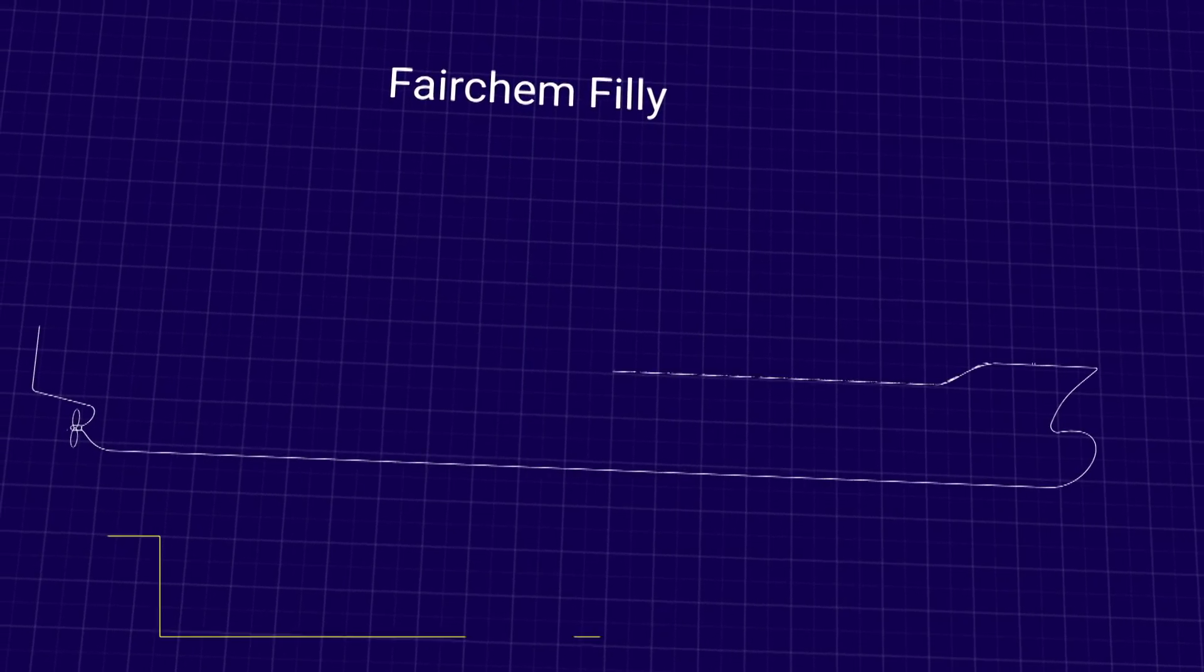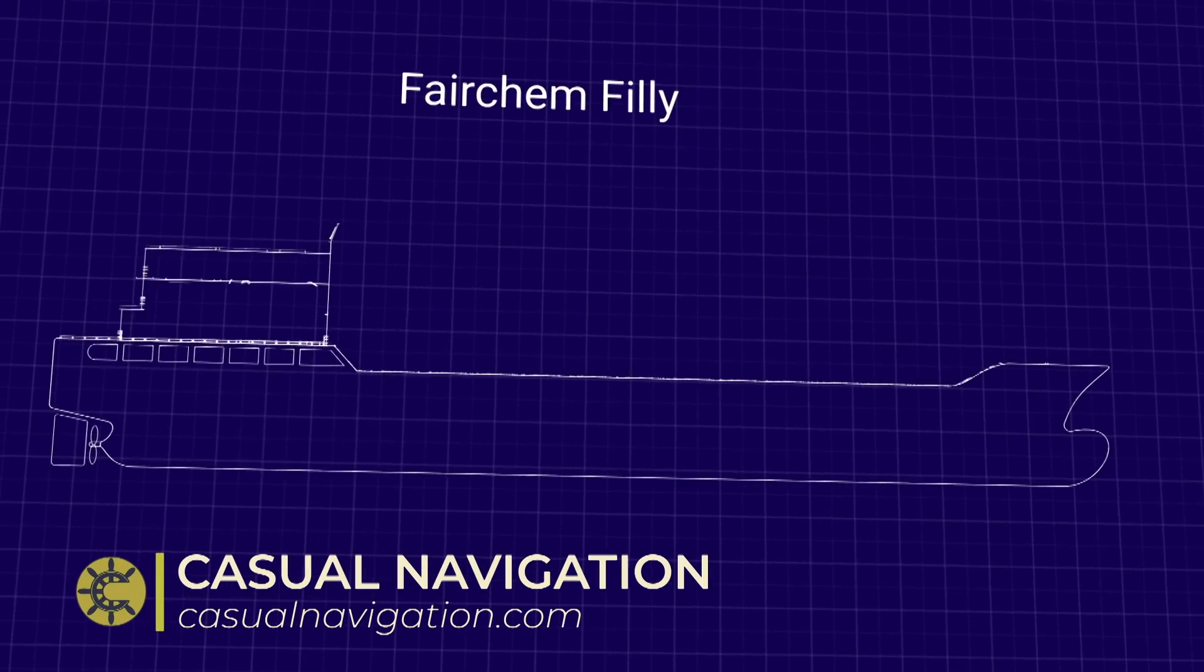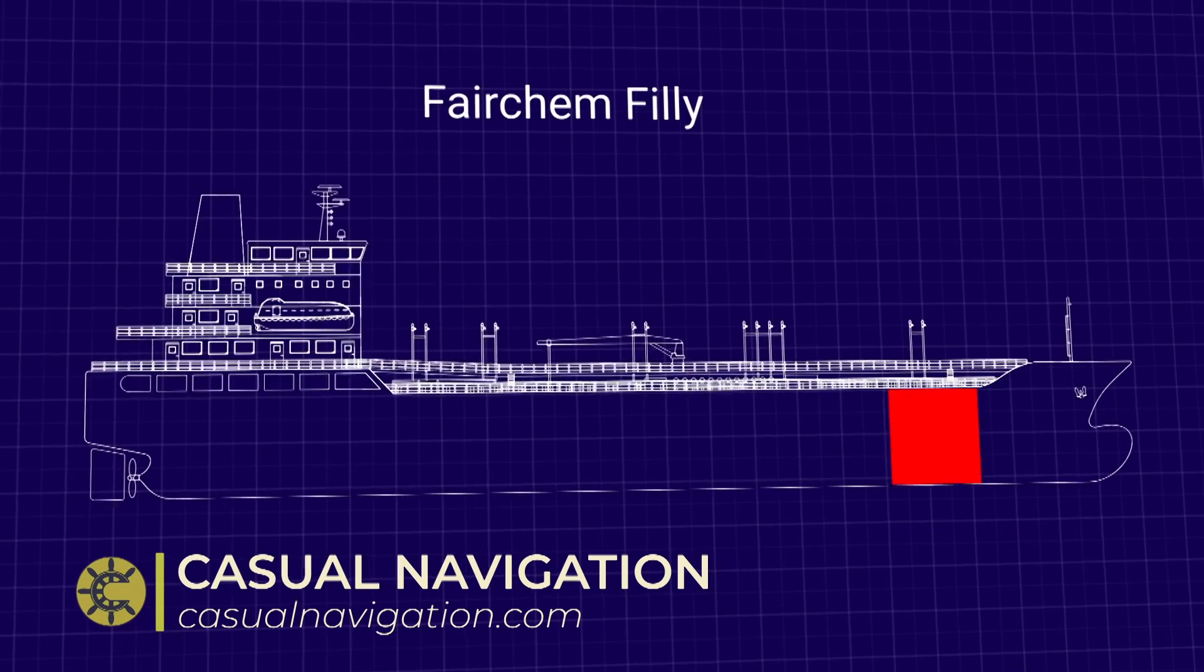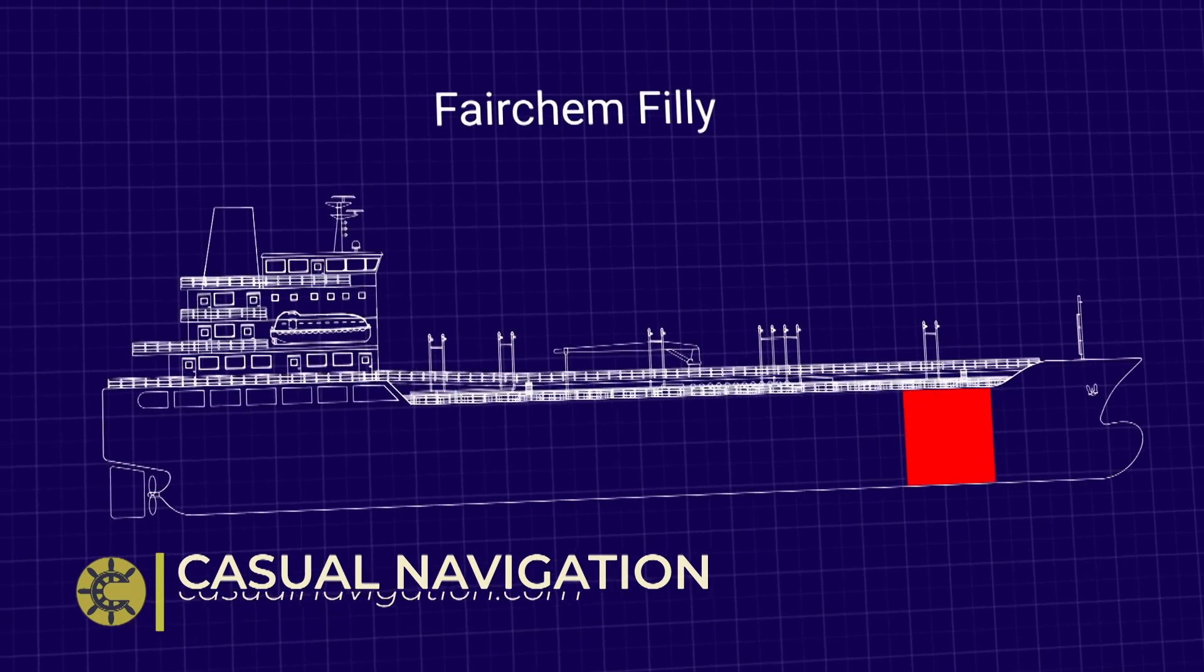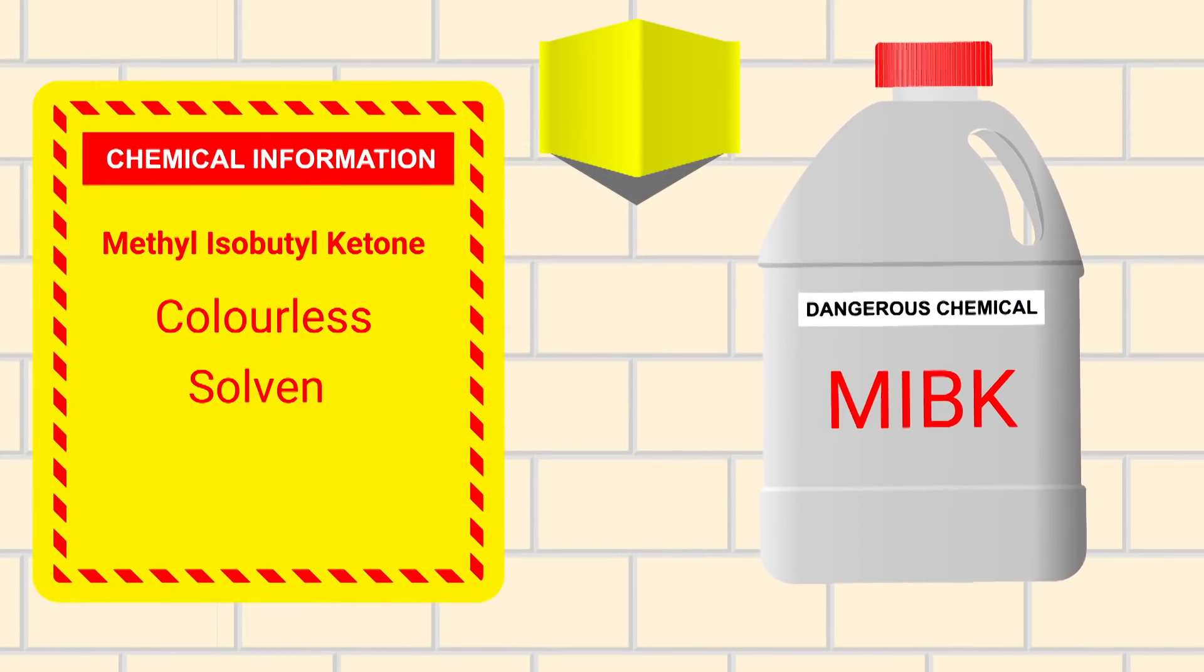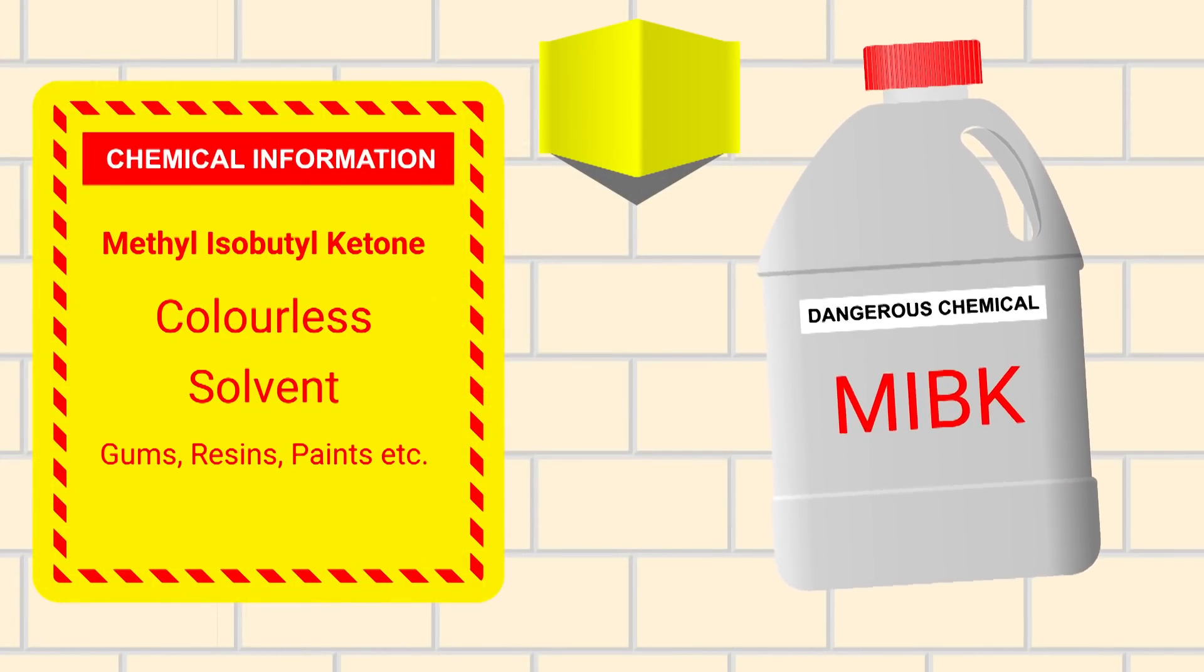Fair Chem Philly was a 479 foot or 145 meter chemical tanker carrying a split cargo of methyl isobutyl ketone, MIBK, and liquid hexine. MIBK is a colourless liquid used as a solvent for gums, resins, paints and things like that.